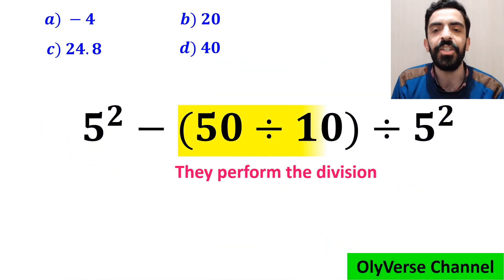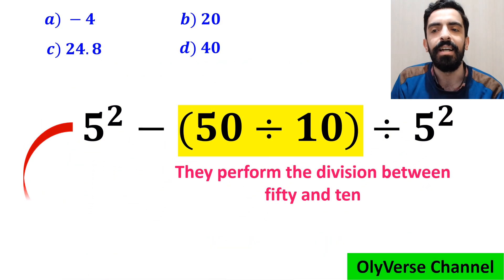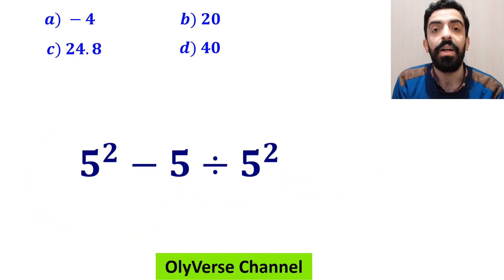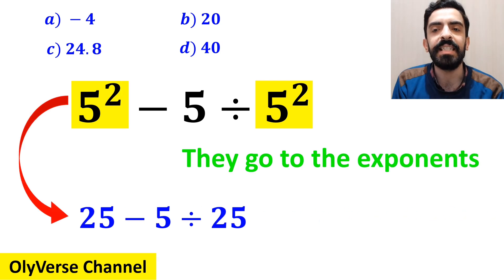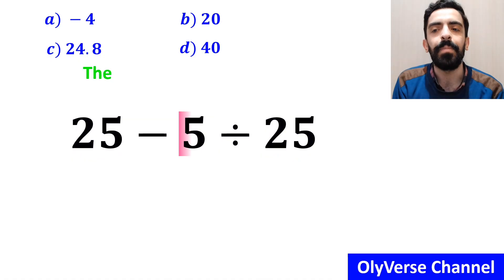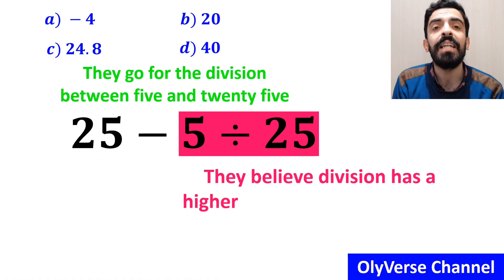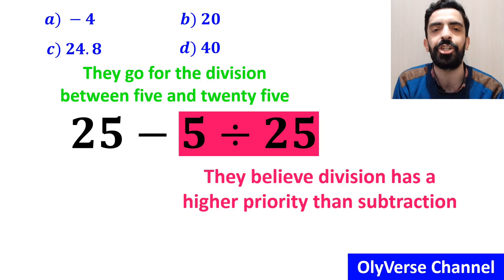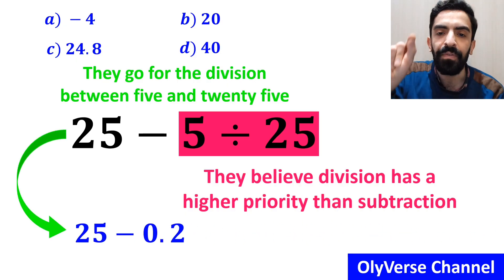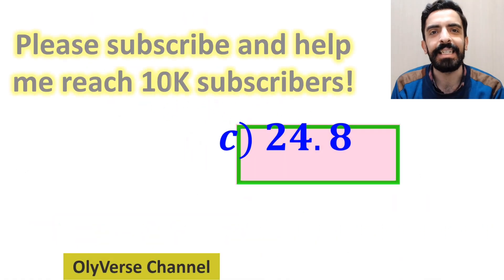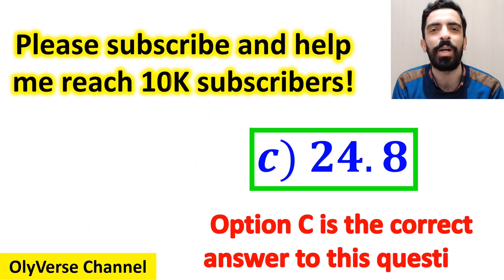In the next step, they move on to the division between 50 and 10, replacing the expression with 5 squared minus 5 divided by 5 squared. Then they simplify the exponents to get 25 minus 5 divided by 25. Finally, they divide 5 by 25, writing the expression as 25 minus 0.2, which gives them the answer 24.8. They quickly say option C is the correct answer.